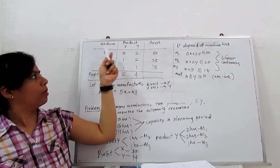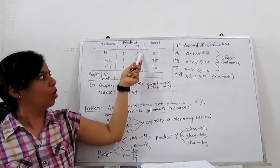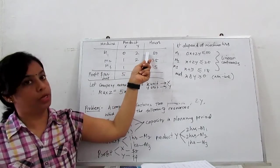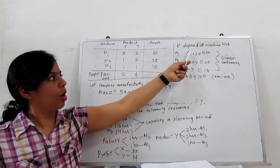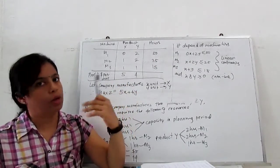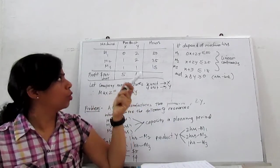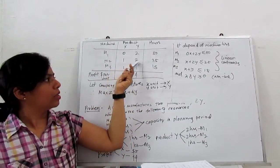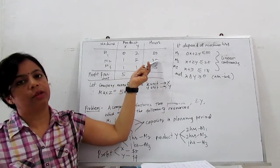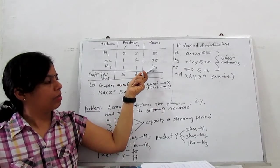For machine one: product X needs zero hours, Y needs two hours, and maximum hour is 50. So M1 is 0X + 2Y, always less than or equal to 50 because machine one capacity is 50 hours. For machine two: X + 2Y ≤ 25. For machine three: X + Y ≤ 15. These are called linear constraints.